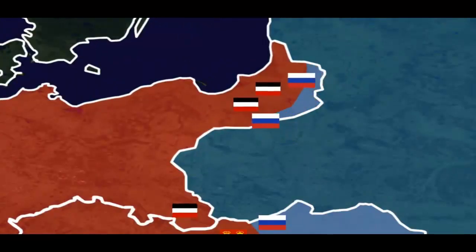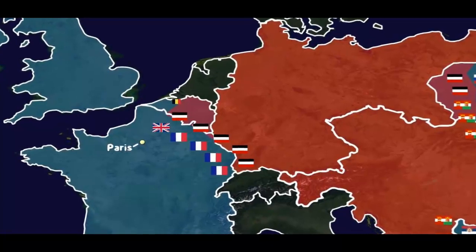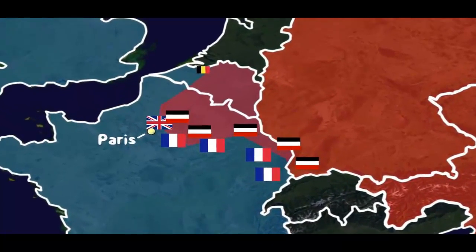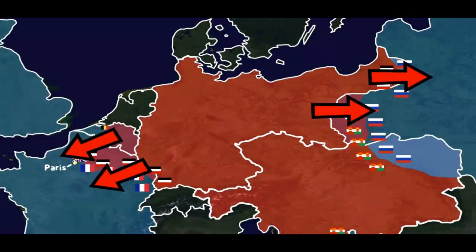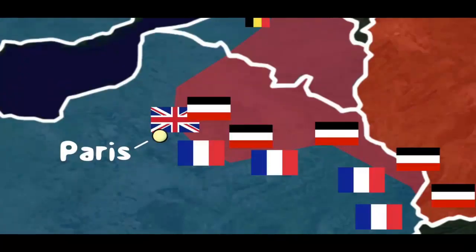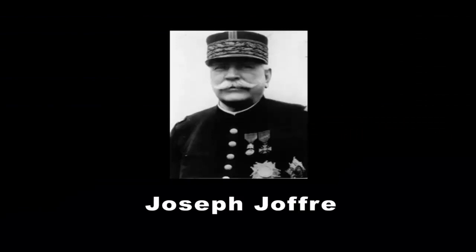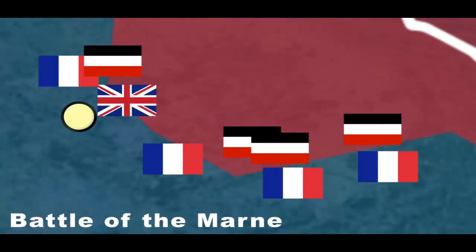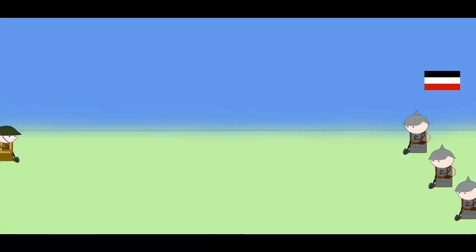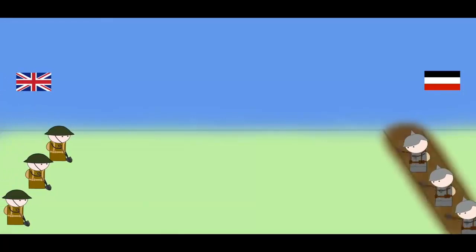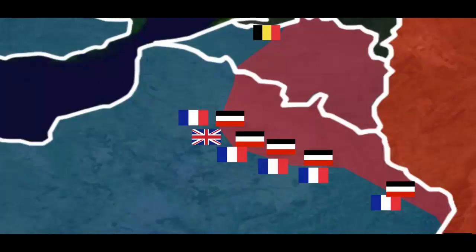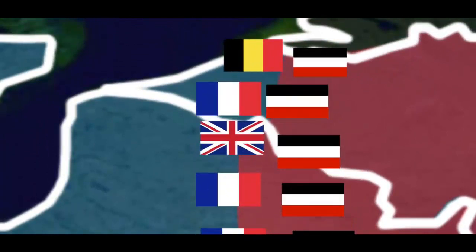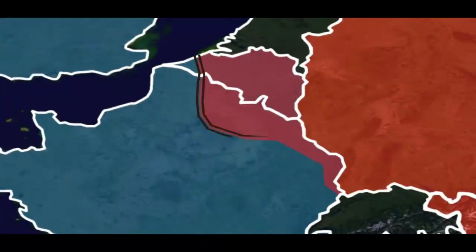Germany nearly wiped out the Russian Second Army in the north. On the western front, the Germans advanced and were within sight of Paris. But the French commander-in-chief ordered his armies to stop retreating, and a gap opened in the German lines. The Allies exploited the gap to flank the Germans, who were forced to retreat. Both sides then dug defensive positions and moved north trying to outflank each other, reaching a stalemate with trench systems running from the coast all the way to Switzerland.